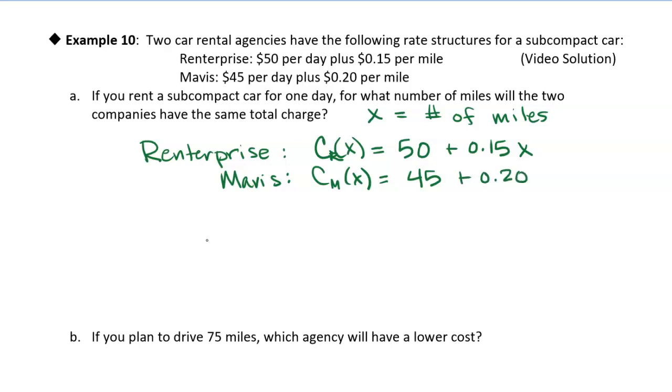Alright. So they charge, Mavis charges $45 fixed charge, and then $0.20 a mile. So everything's in dollars. I'm saying $0.20, but it's 0.2 dollars, of course. Alright. So if I take $0.20 times the number of miles that we drive, that would give us our cost. That would give us our total cost, right? If we add the $45 fixed cost, plus $0.20 for every mile that we drive.